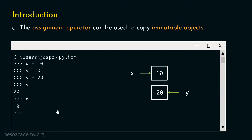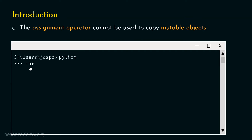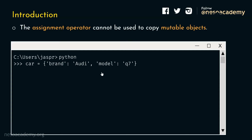We know the assignment operator can be used to copy immutable objects. But what about mutable objects? We cannot use the assignment operator to copy mutable objects — it is not useful for creating a copy of mutable objects. We can understand this with the help of an example. This time, we will type: car equal to {'brand': 'Audi', 'model': 'Q7'}. So we have a dictionary called car with two key-value pairs.